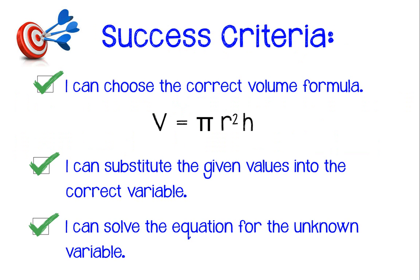In order to be successful in this lesson, you need to be able to do the following three things. You need to be able to choose the correct formula. For today, we're only working on cylinders, so that formula is pi times radius squared times height. The second thing you need to be able to do is substitute the given values from your problem into that formula by removing the correct variable. And the third thing is to solve the equation for the unknown variable. So for us today, the unknown variable is going to always be r.